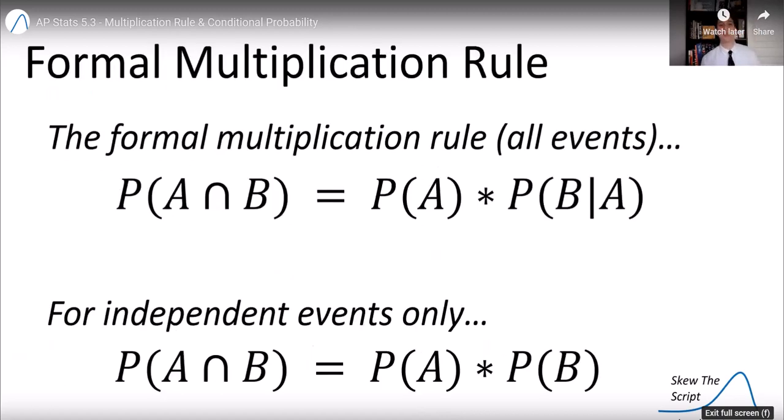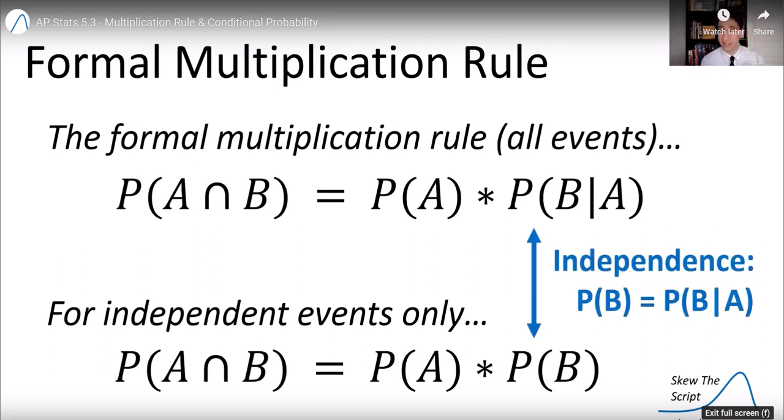Now let's talk about the multiplication rule. This is the formal multiplication rule. The probability of A and B happening is the probability of A times the probability of B given A. That's kind of complicated. For independent events we just talked about, it's a little bit simpler. The probability of A and B happening is the probability of A times the probability of B. But again, we don't want to be using formulas. Let's talk about some intuition here.